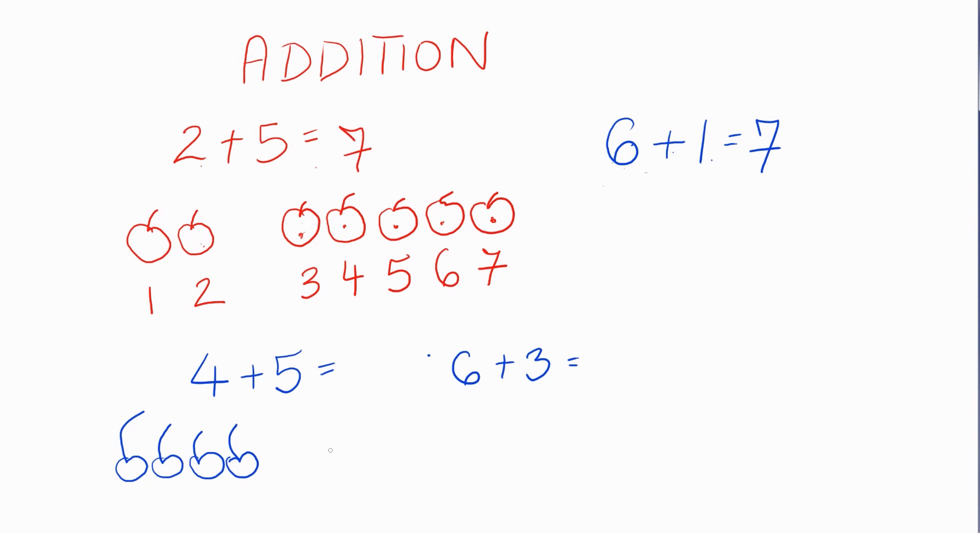And here's 5. So 1, 2, 3, 4, 5. Let's count them up. There's 1, that one, 2. This one is 3. This one is 4.